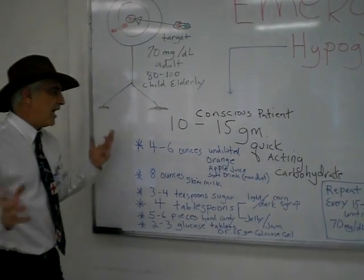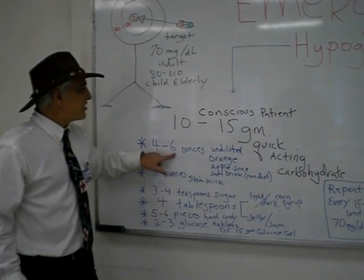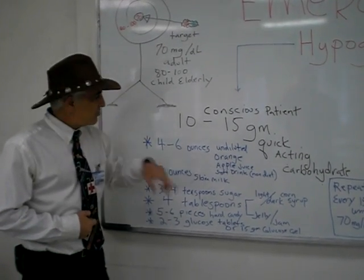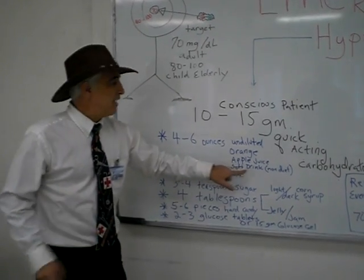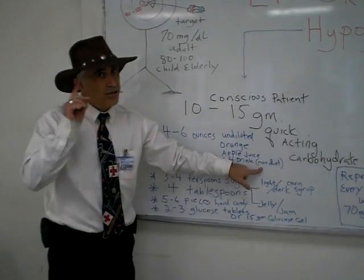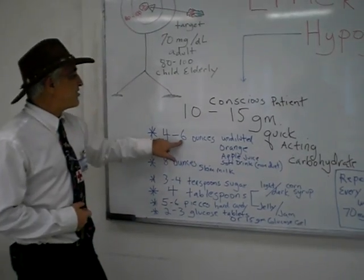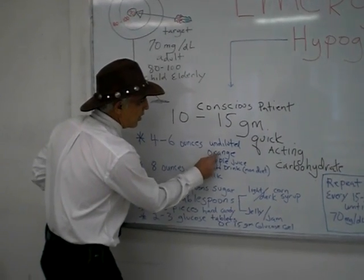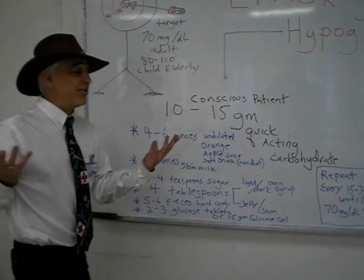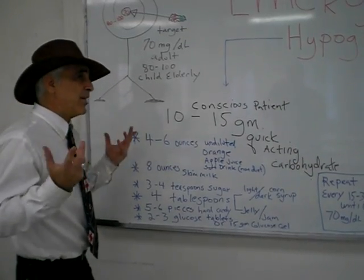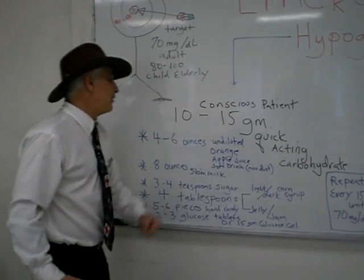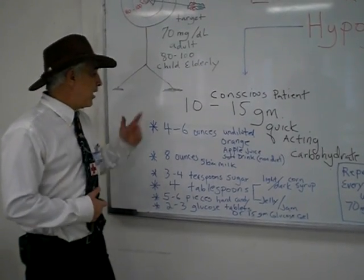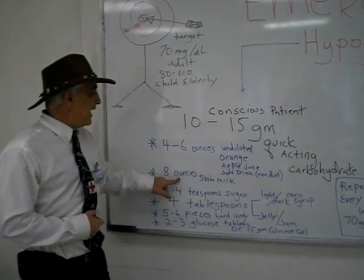Four to six ounces of undiluted juice — you have three options: orange juice, apple juice, or a non-diet soft drink. A memory tip: orange is spelled O-R-A-N-G-E — six letters, so six ounces. Apple has five letters, which fits within the four-to-six ounce range.